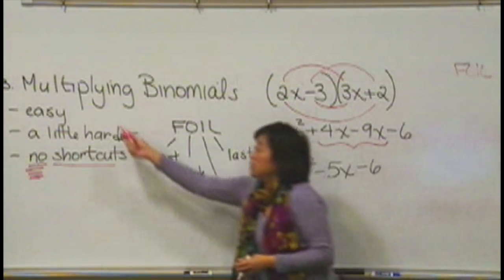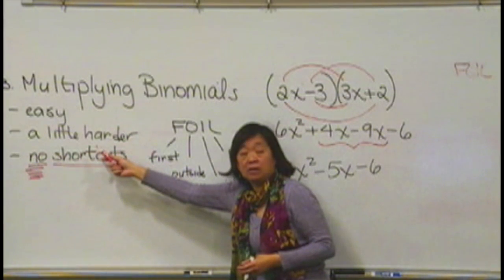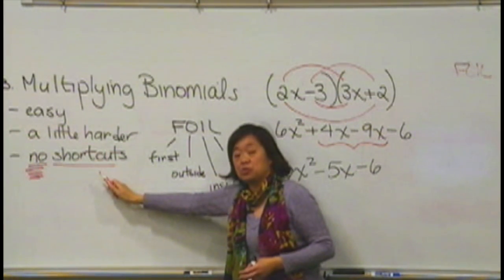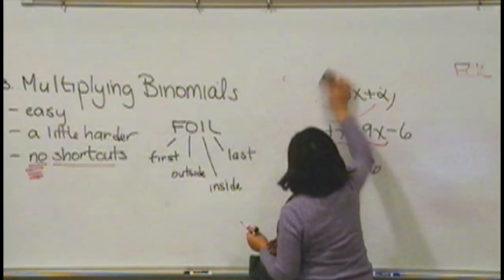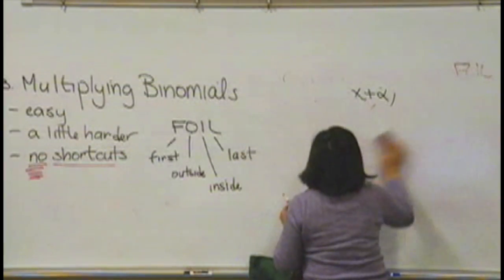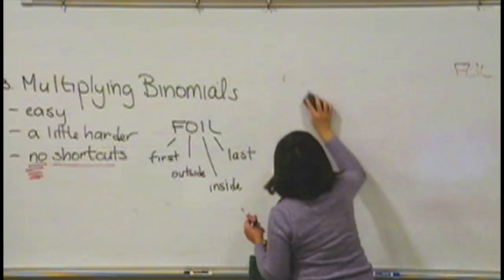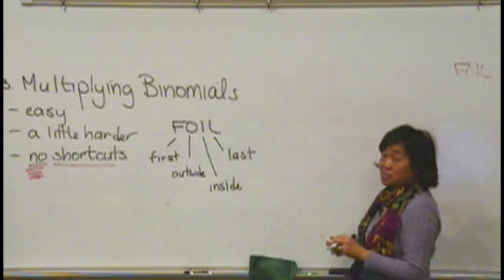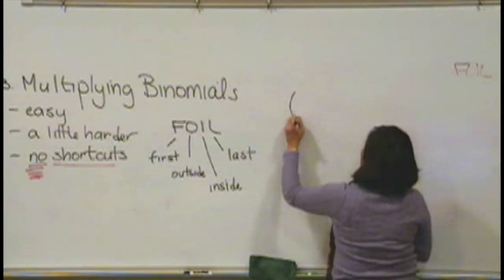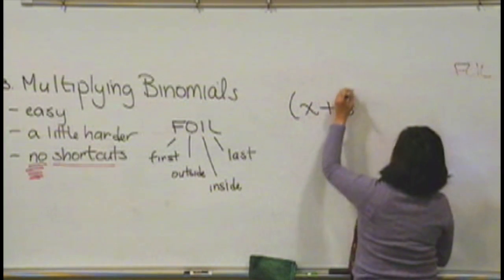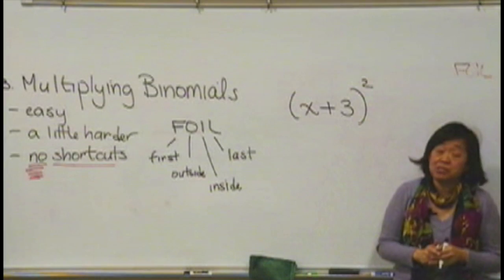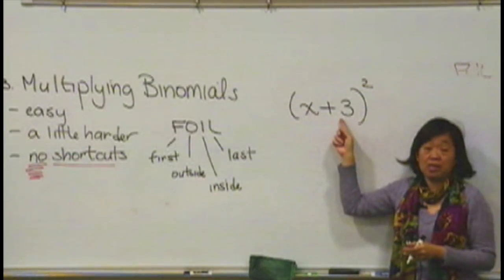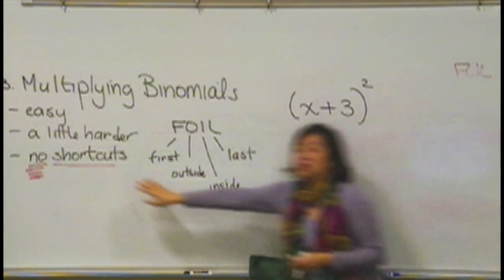So, we did an easy one. We did one that's a little harder. I want to remind you that there's no shortcuts on these. Sometimes, when you're given a multiplication of binomial problem that's not written out, people are tempted to take a shortcut that will always give you the wrong answer. So, what if we had x plus 3 squared? People often make the mistake of thinking that you can just square x and square 3, and you get x squared plus 9. That shortcut doesn't work. No shortcuts.